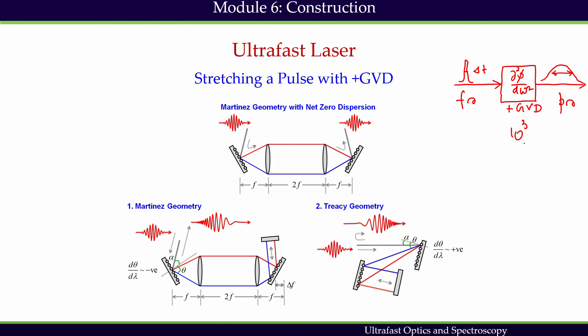We need certain optical elements which will introduce a large amount of positive GDD, of the order of 10^3. In this case, a grating pair is very suitable. A grating pair provides the necessary high dispersion required to stretch a pulse by a factor of 10^3 to 10^4.